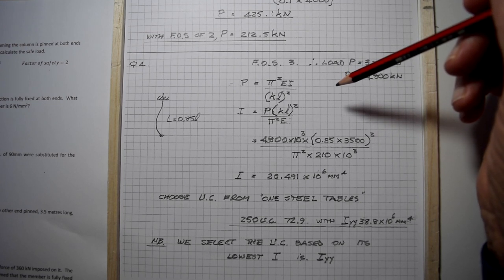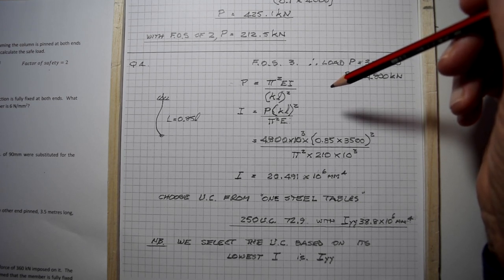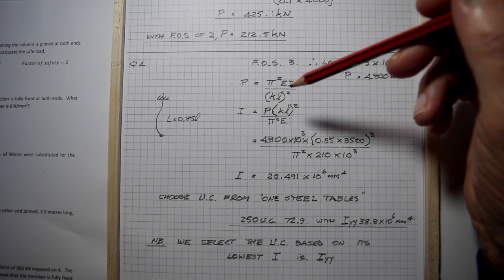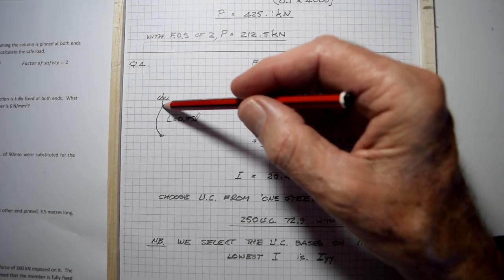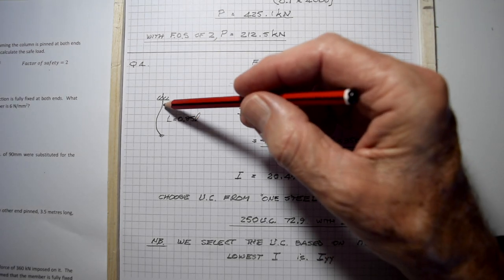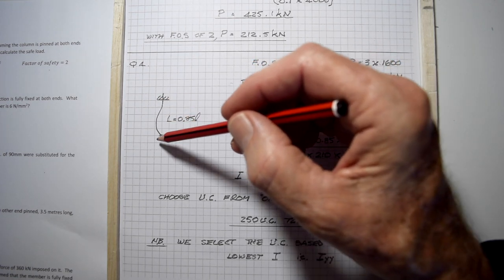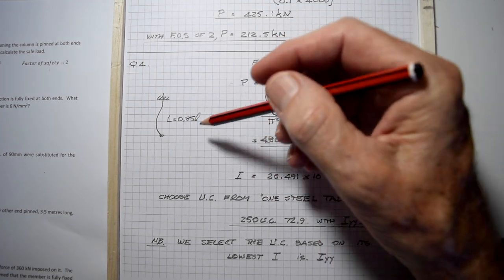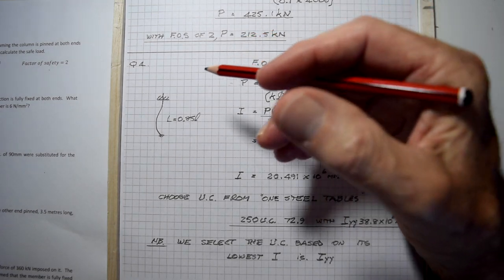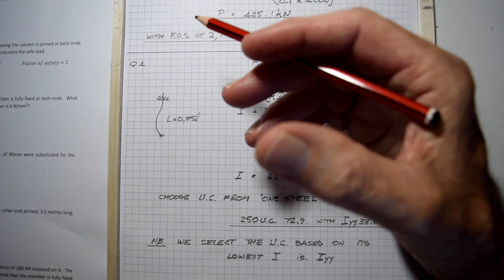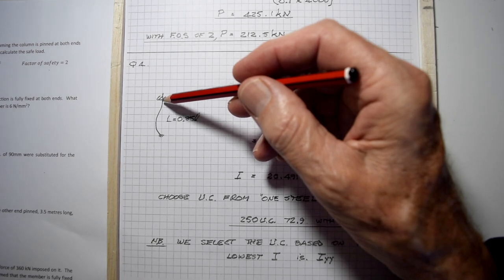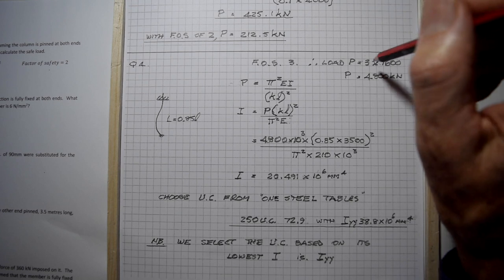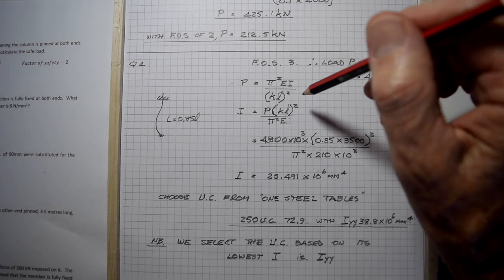Question four: select a universal column assuming one end fixed and the other pinned, 3.5 meters long, to carry an axial load of 1600 kilonewtons. The effective length is 0.85 where you have one end fixed and the other end pinned. We use a factor of safety of three.